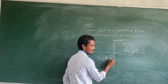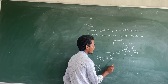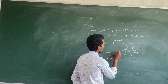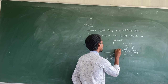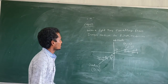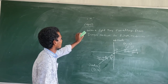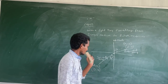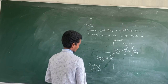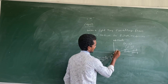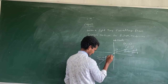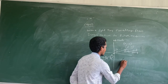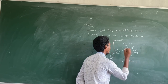What is the angle of incidence? The angle between the incident ray and the normal is called the angle of incidence. The angle between the normal and the refracted ray is called the angle of refraction. When light travels from the denser medium to the rarer medium, the angle of refraction is greater than the angle of incidence.